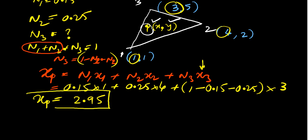Similarly, we will calculate for y also. So, y suffix P is equal to N1·y1 plus N2·y2 plus N3·y3.